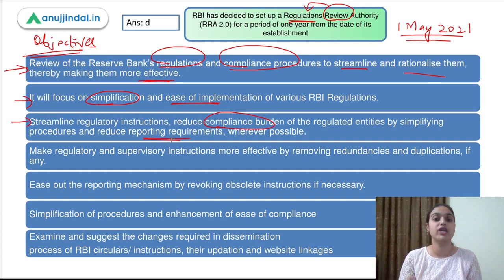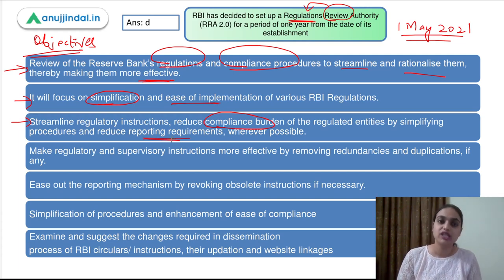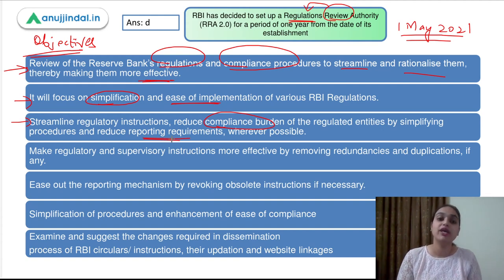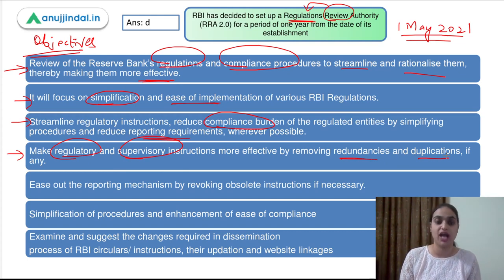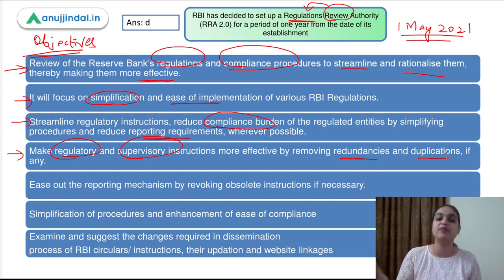The more complex the regulations are, the more difficult it will be not only for all the banks who have to implement them, but for the RBI as well. The more difficult your requirements, the harder it will be for banks to implement them, and it will be difficult for RBI to make sure that the banks are adhering to those norms. So we need to reduce the compliance burden and simplify things. Making the regulatory and supervisory instructions more effective is the basic idea behind this review. Wherever there is redundancy or duplication, we need to make sure all such duplications can be removed so that the procedure becomes more efficient.